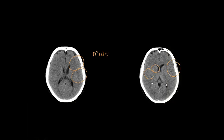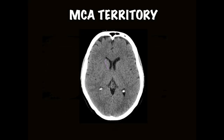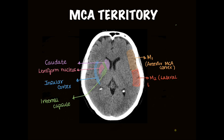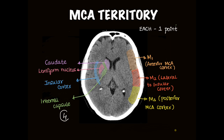Each section has multiple areas, each given a score of 1 point. Areas at the level of basal ganglia are: caudate nucleus, lentiform nucleus, the internal capsule, and the insular cortex. The cortex is divided into three parts: M1 (anterior MCA cortex), M2 (lateral to insular cortex), and M3 (posterior MCA cortex). Each of these is given 1 point, so 4 plus 3 equals 7 points in this section.